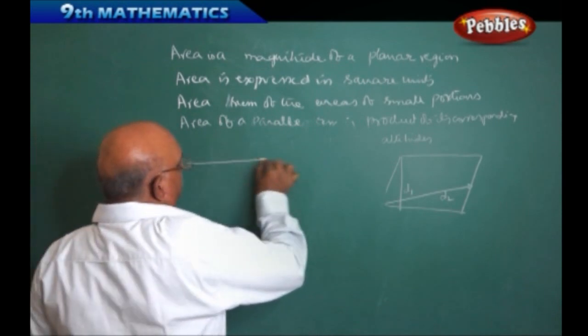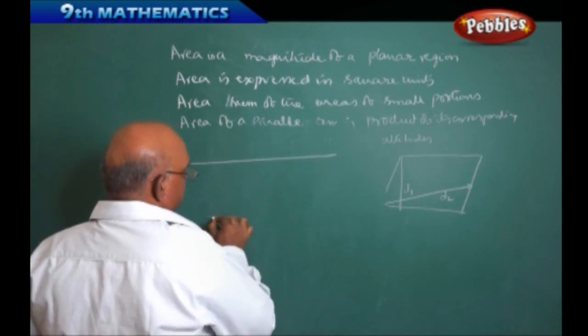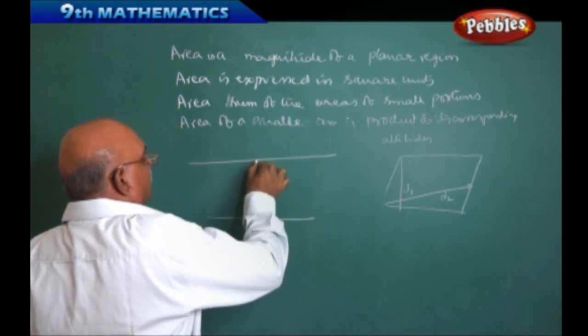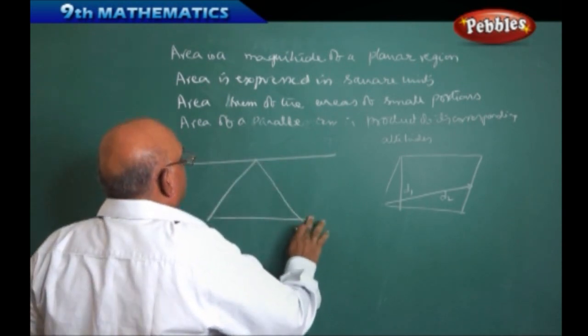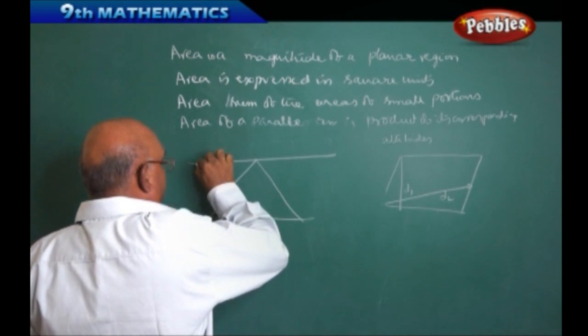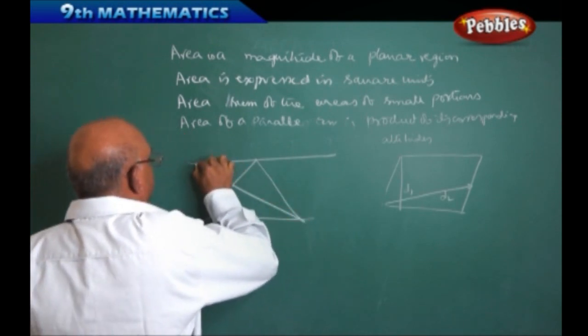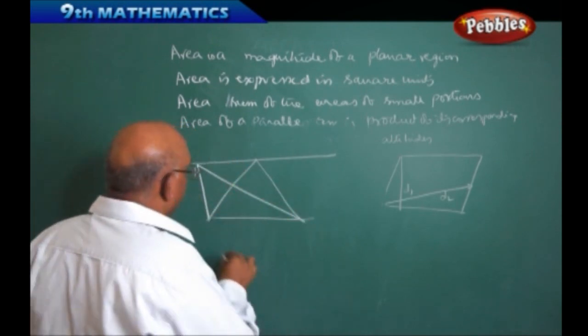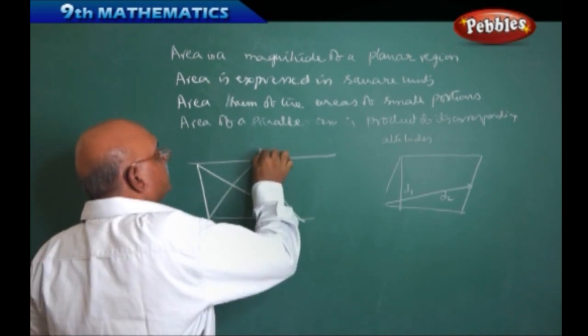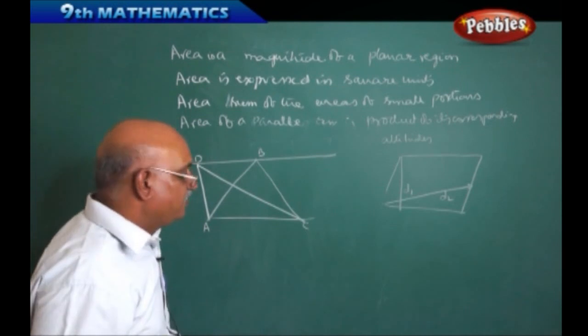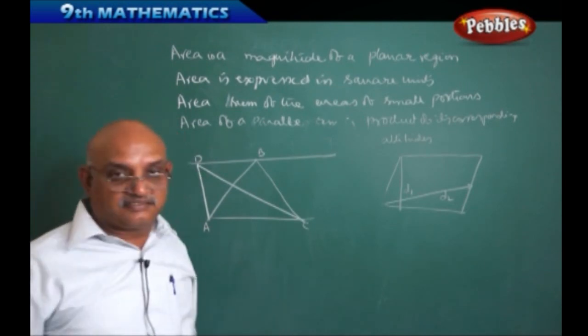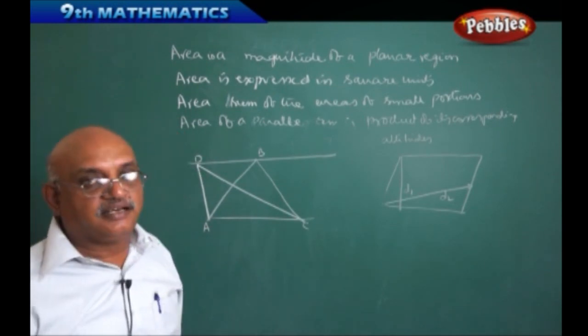Suppose there are two different lines are given. I have a triangle like this. Now, I have another triangle like this. Let us call it as, this is A, B, C, D.